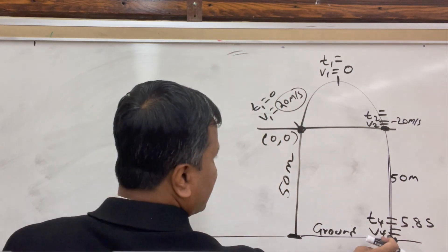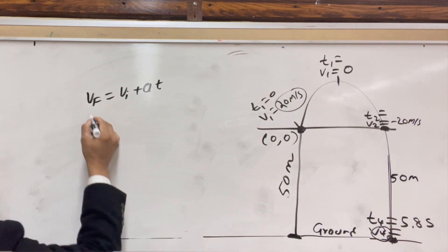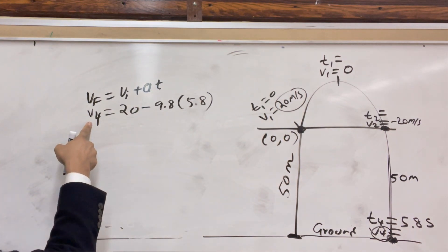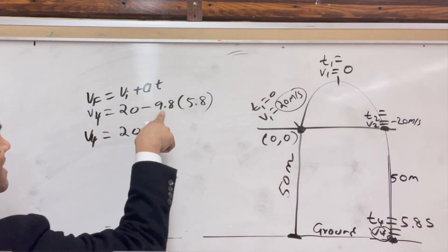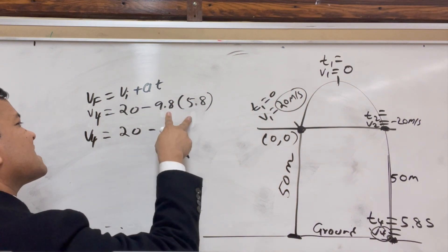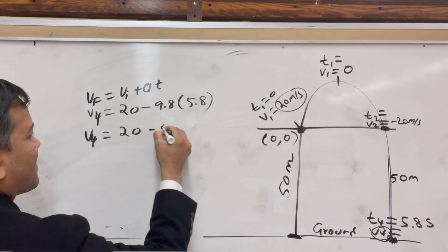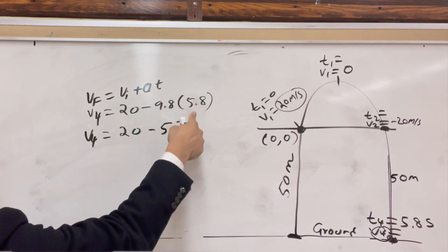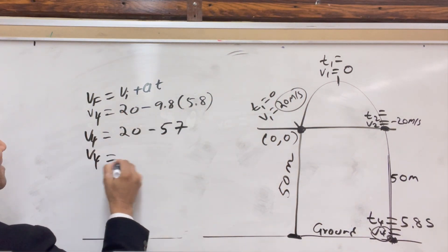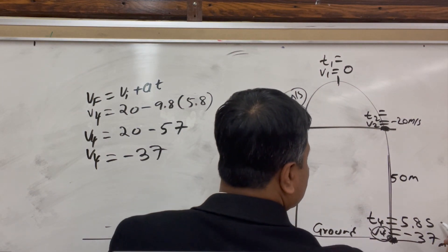We're going to find V_final at T4. V_final = V_initial + at. V4 = 20 − 9.8 × 5.8. Since 10 × 6 = 60, and 9.8 × 5.8 is a little less than 60, it's about 57. So V4 = 20 − 57 = −37 m/s. Our velocity at T4 is −37 meters per second.